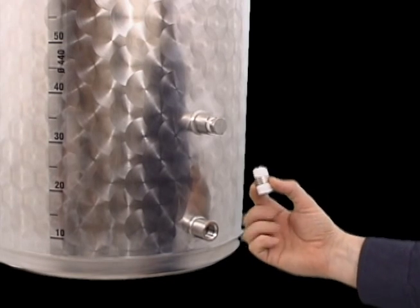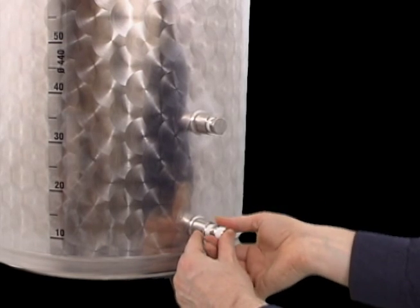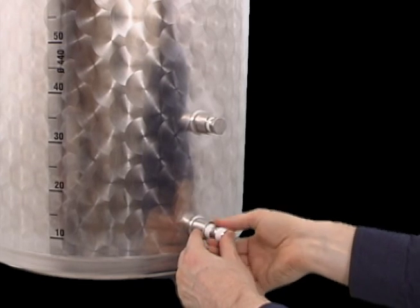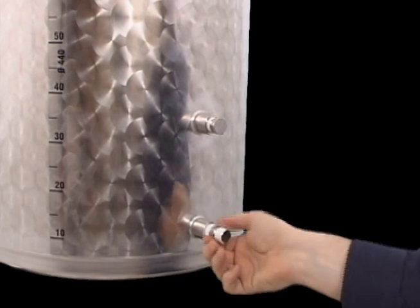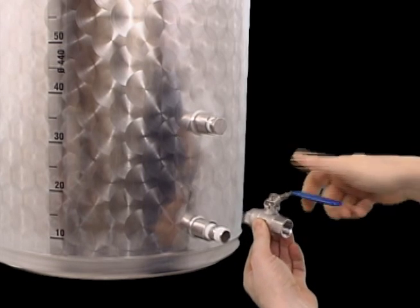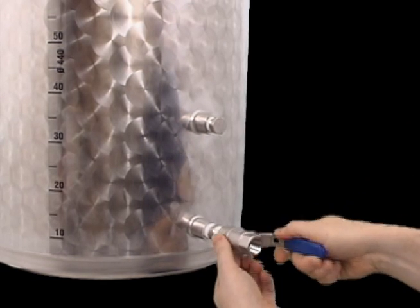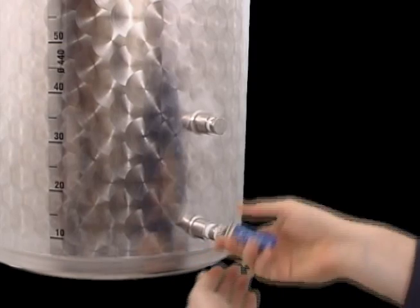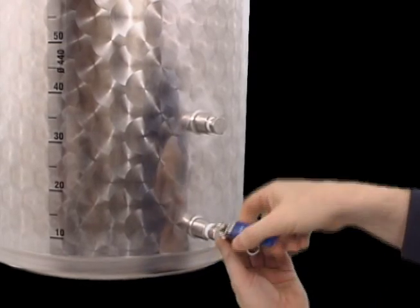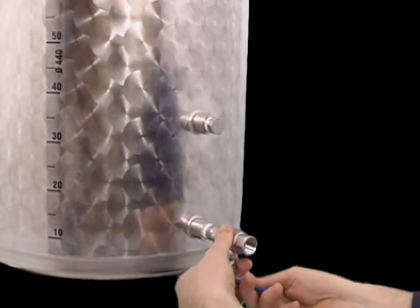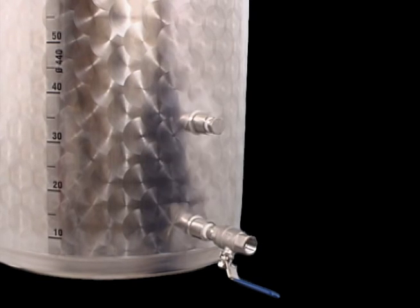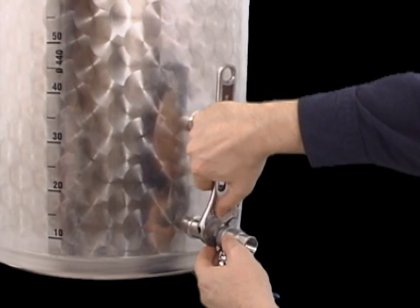The lower port receives the ball valve. Begin by screwing in the stainless steel nipple until finger-tight. It's important that the ball valve be oriented so that the handle points away from the tank when in the open position. Attach the valve to the nipple and screw until finger-tight. Finally, using a wrench, gently tighten the valve until snug.